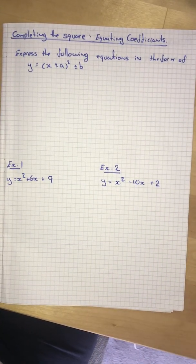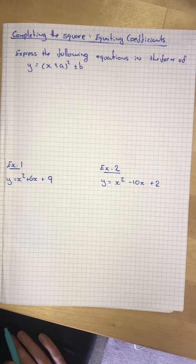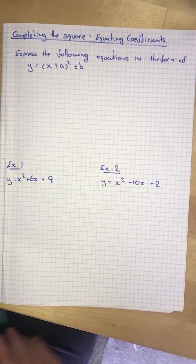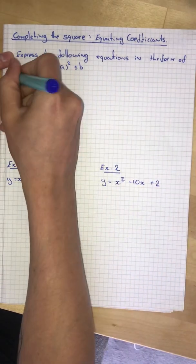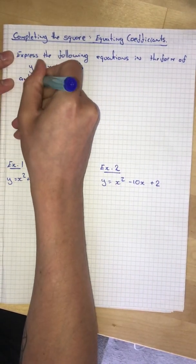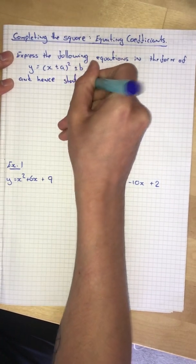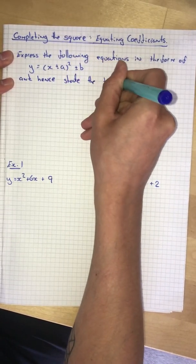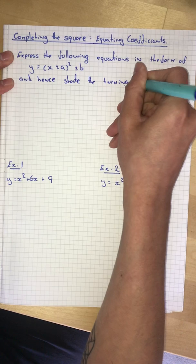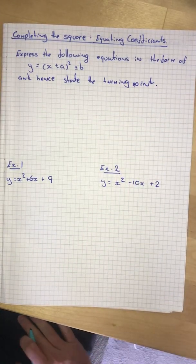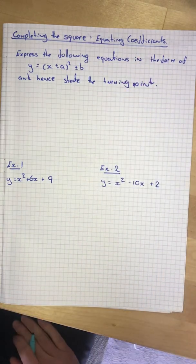So this is a method of completing the square which is going to allow us to read off the turning point and hence state the turning point. So first this method which we're going to call equating coefficients.